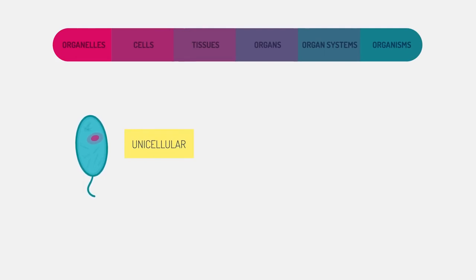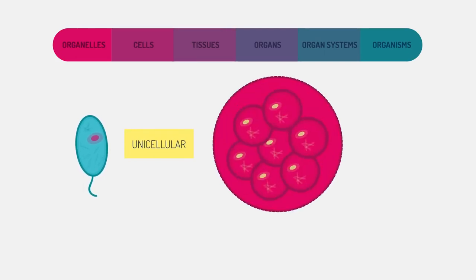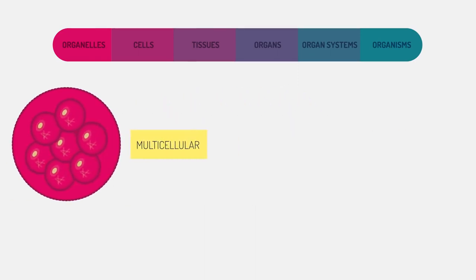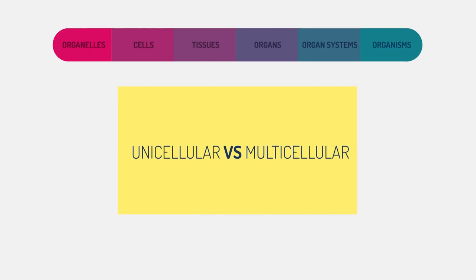To learn more about the differences between unicellular and multicellular organisms, watch this video. All living things are made up of cells. This is what distinguishes them as living.